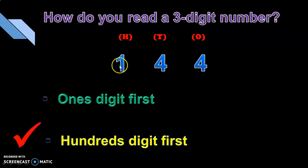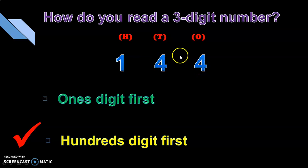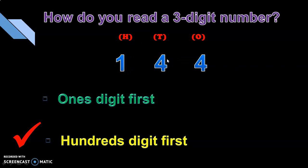We begin with the 100s place, and then read the 10s and the 1s digit together — 44. We combine them and read. So that is the rule to read a 3-digit number: always begin with the 100s digit, and then combine the 10s and 1s digit together and read them.